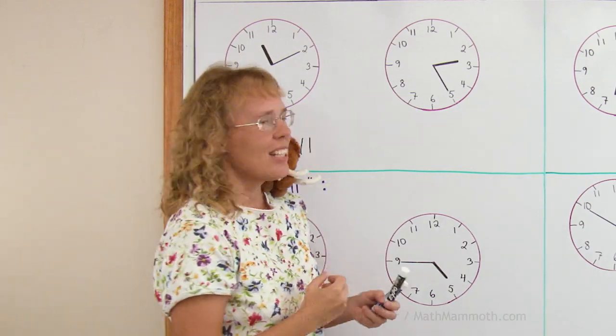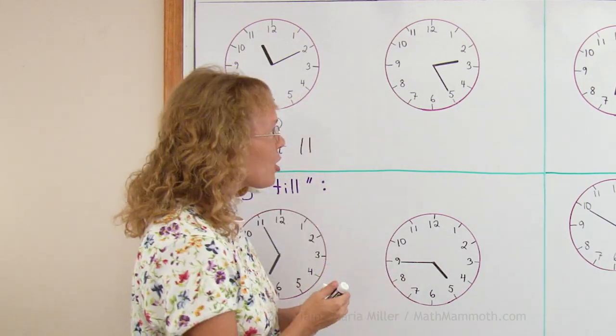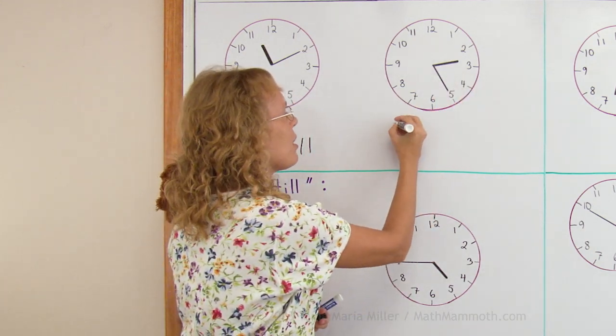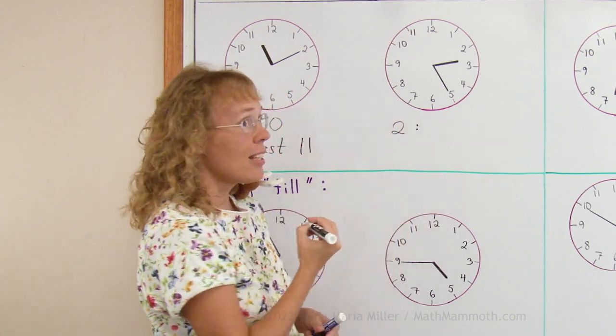Let's try another one. Let's just first write it the way we are used to. You look at the hour hand. And so it is past 2 o'clock, 2 something, 2 hours, and then the minutes.